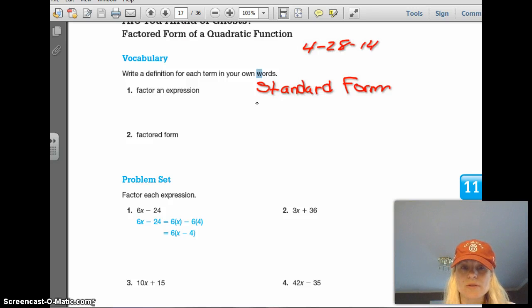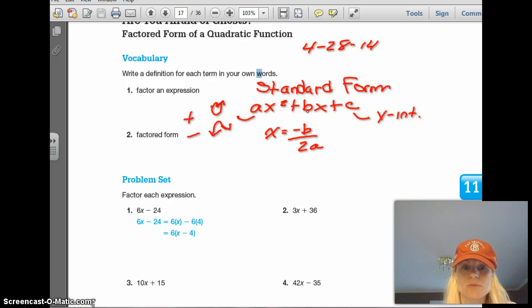We know about standard form. We have ax squared plus bx plus c. We should remember that this is the y-intercept. This tells us if it's positive, it's up, and if it's negative, it's down. And then we also need to know the axis of symmetry, which is negative b over 2a. So there's your b and there's your a. So those are things we should know.